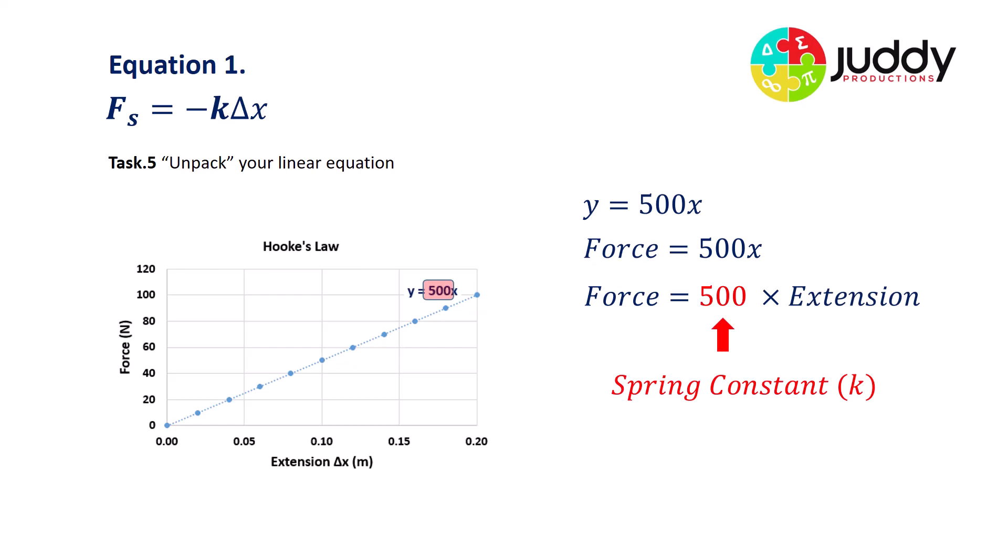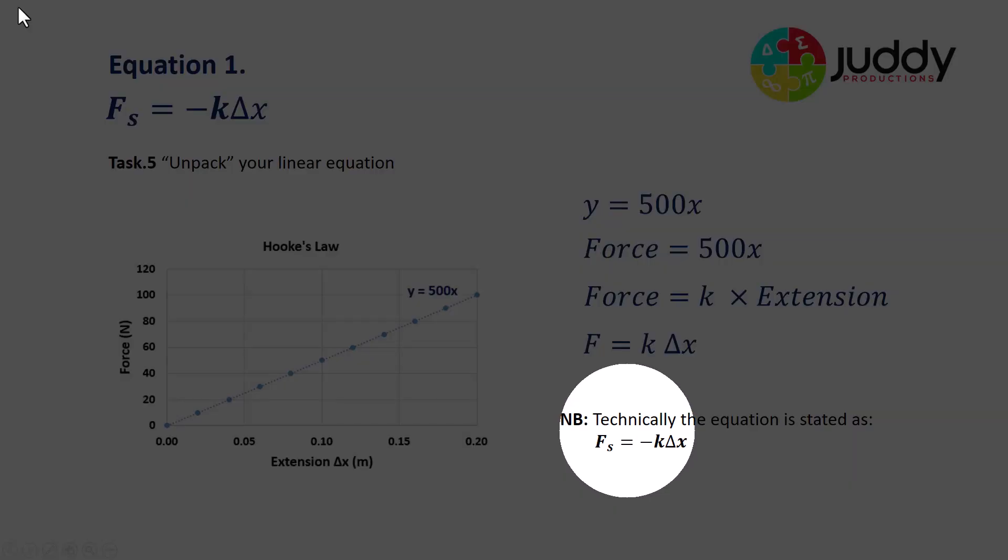Now you recall 500 was the spring constant K that I chose for my simulation. So we know that the gradient of 500 actually represents the spring constant. So we have force equals K times extension, and this is traditionally written as F equals K delta X. That looks very similar to our first equation at the top here with the exception of the negative symbol. So technically this equation is stated as the restoration force equals negative K delta X.